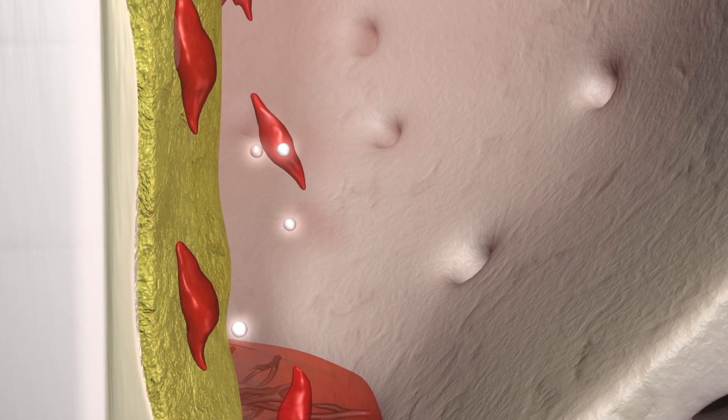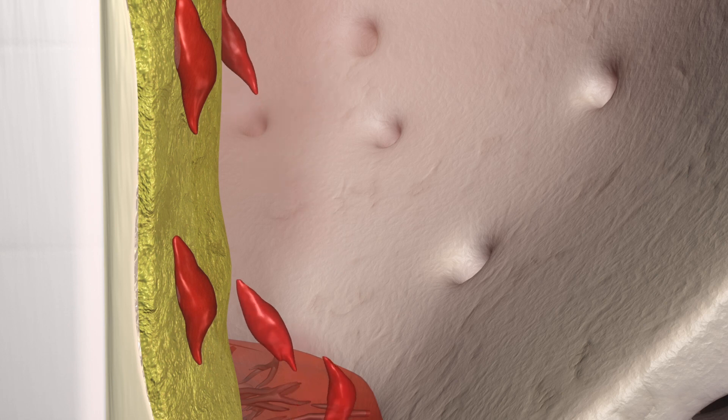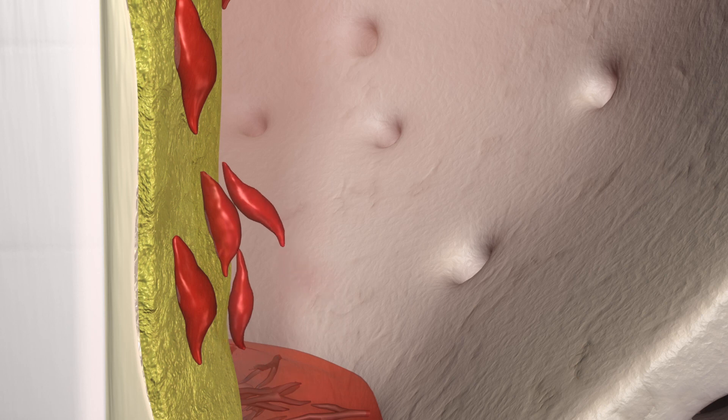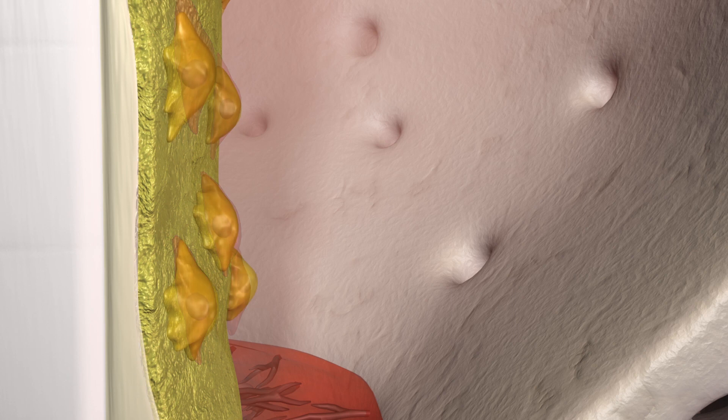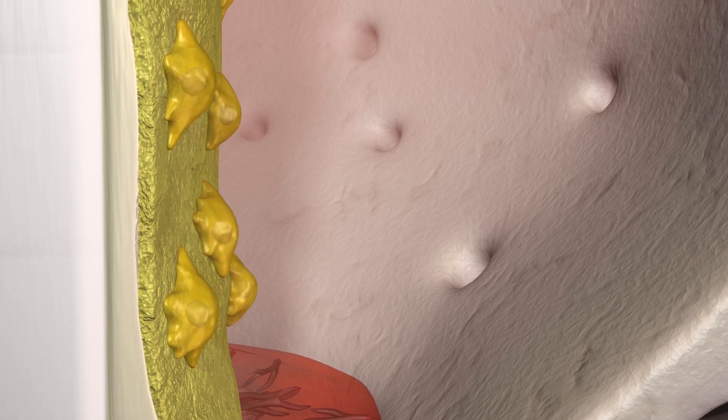Under these optimal conditions, supporting cells settle on the root surface. There, the supporting cells become differentiated to cementoblasts and begin formation of the cement matrix in which the periodontal fibers will be fixed.